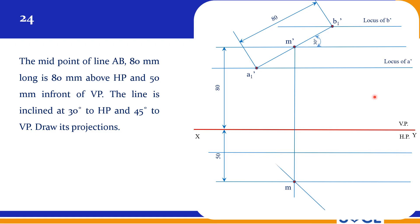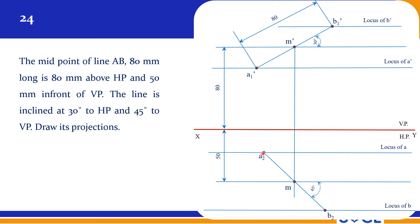Similarly, at 45 degrees to VP, draw a line and take 40 mm on each side of M along the 45-degree line. Draw locus lines through A2 to get the locus of A, and through B2 to get the locus of B.